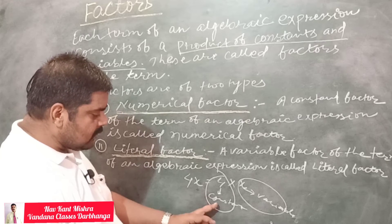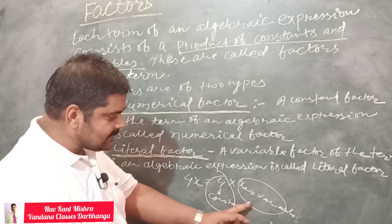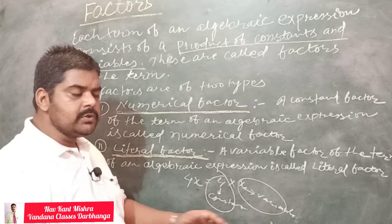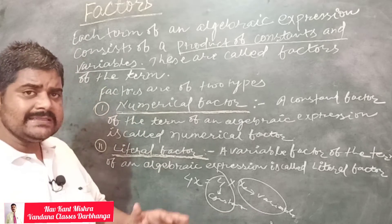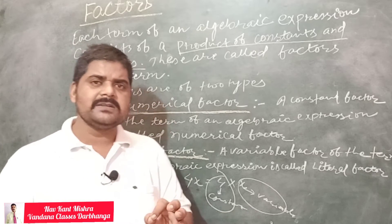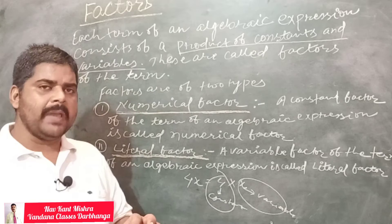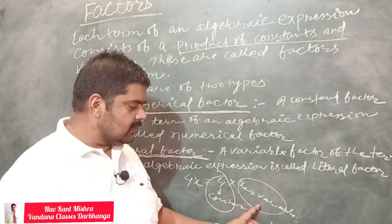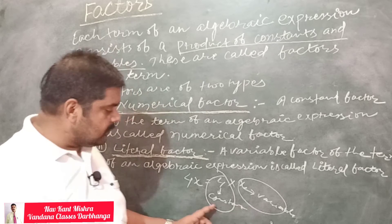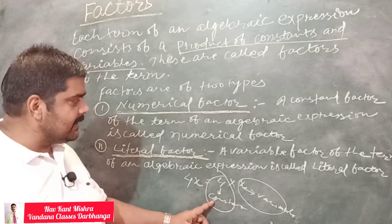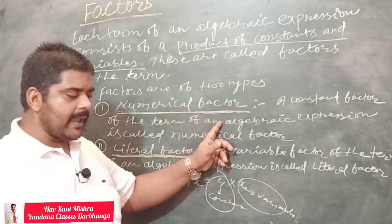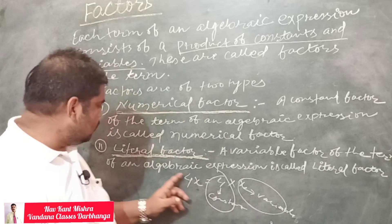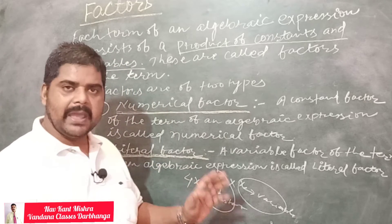One is the constant factor and the second is the variable factor. You can say that an algebraic term has two factors: one constant factor and one variable factor. The constant factor is known as the numerical factor, and the variable factor is known as the literal factor.